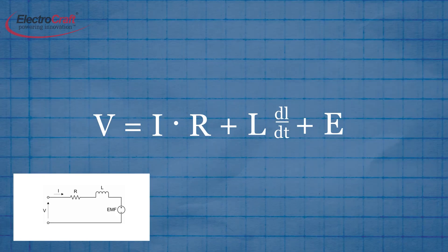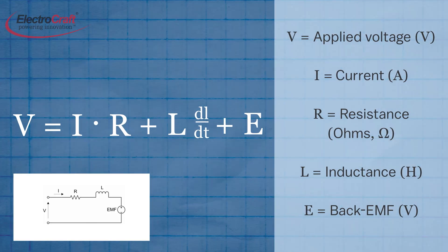Here, the applied voltage equals the voltage drop across the resistance R and the inductor L, plus the back EMF voltage.